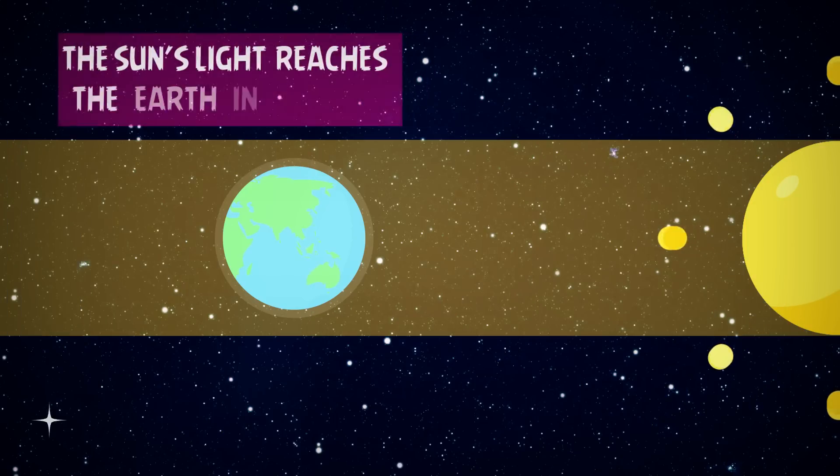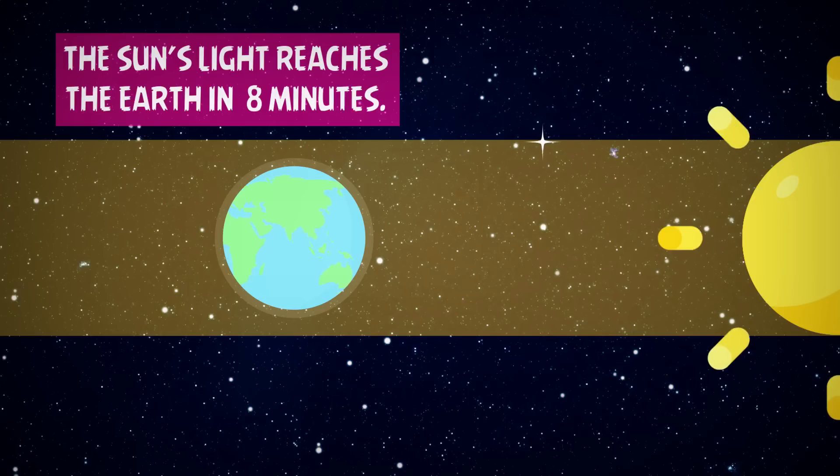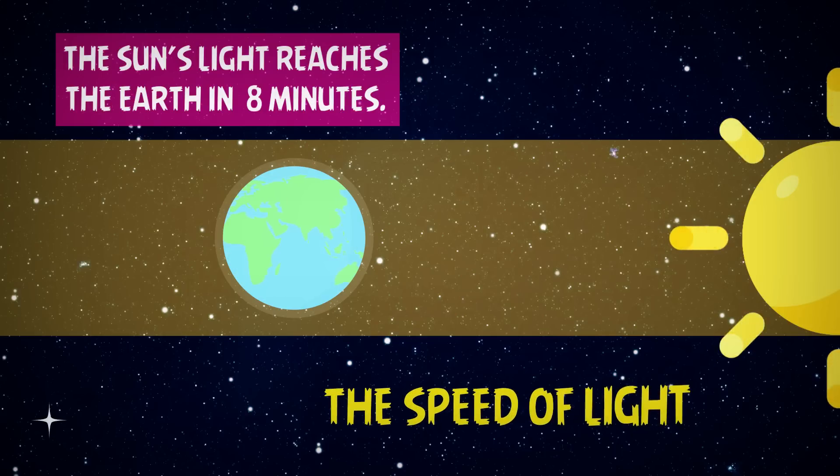Number 5. The sun's light reaches the earth in 8 minutes. This is known as the speed of light.